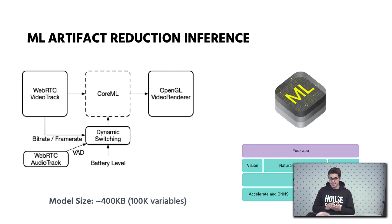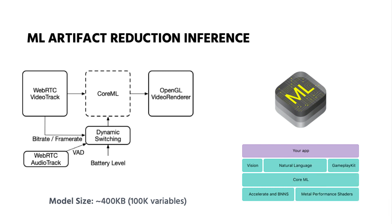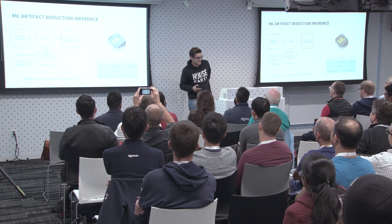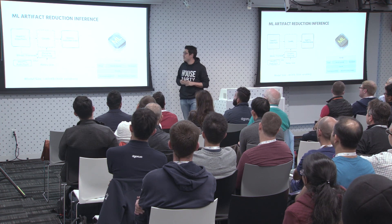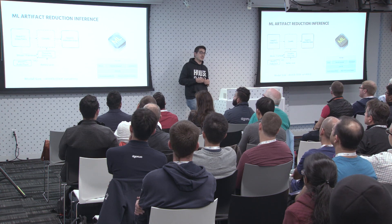Once we had the trained model, the next step was to implement it on mobile devices. To implement machine learning models on mobile devices these days you have two main frameworks: one is ML Kit from Google, which is a multi-platform one that we have used in the past for smile detection, and the other is Core ML from Apple, available on all iOS and macOS devices.